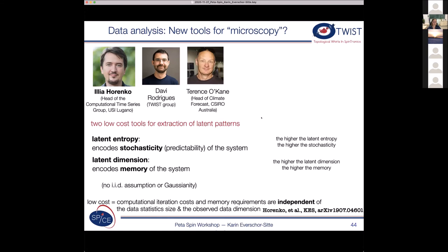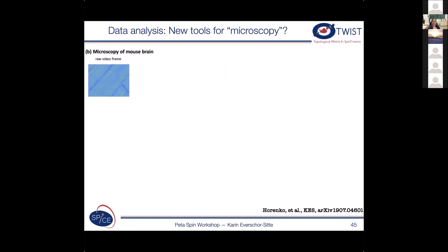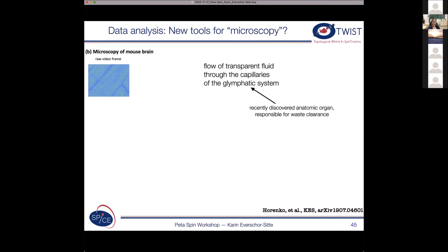So first, let me give you one example. And these are actually really just tools. So you can apply this to any type of video data. And let me show you kind of a very interesting result from biology where we applied this to. So you see here a picture of a microscopy of a mouse brain. And what you're supposed to see is the flow of transparent fluid through the capillaries of the glymphatic system. So just as a background knowledge, so this is a recently discovered anatomic organ, which is responsible for the waste clearance in the mouse brain.